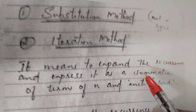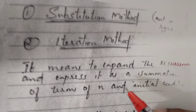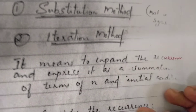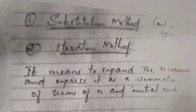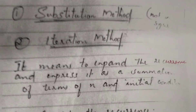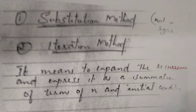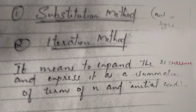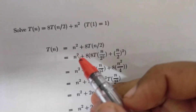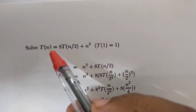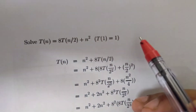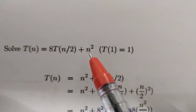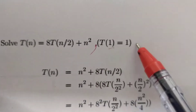We need to expand using the iteration method. In this example, solve the following recurrence relation using the iteration method. T(n) = aT(n/2) + n², with T(1) = 1.